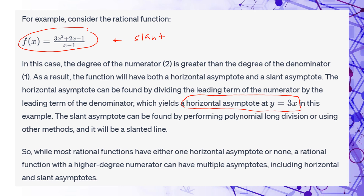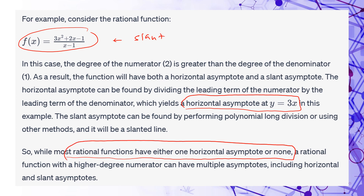All of these answers are incorrect, so you need to be very careful when using a system like this. The one correct thing it mentions is that most rational functions have either one horizontal asymptote or none. If you are a student, be careful using this system because it will give completely wrong answers. This may be a good opportunity for the ChatGPT team to investigate, as they may be applying one algorithm across many different cases.